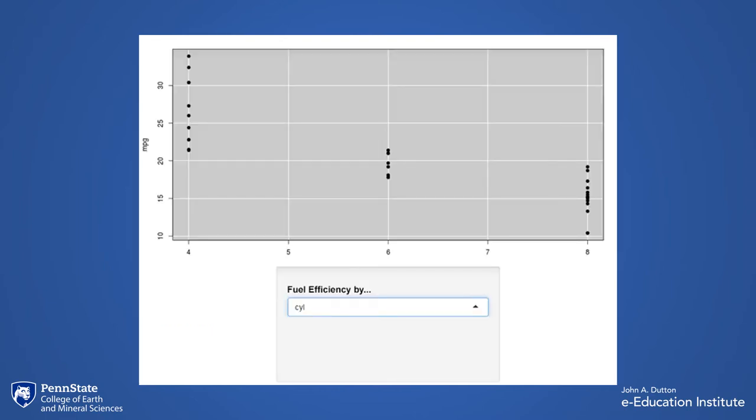This example shows the use of a drop-down menu to change the data shown on the graph. In this class students are asked to use different data sets to compare the fuel efficiency of different cars. This first graph shows the fuel efficiency of cars with 4, 6, and 8 cylinders. The students can use the drop-down menu to change the data set being represented in the graph.